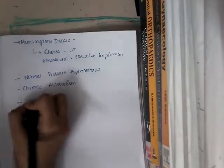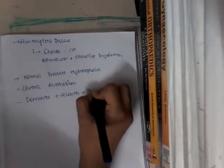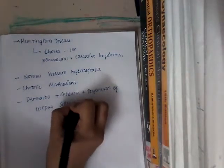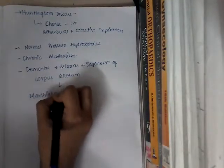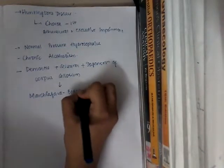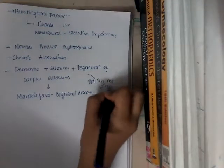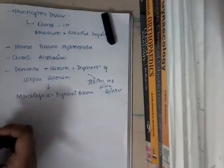There is one more disease where dementia occurs with seizures and degeneration of the corpus callosum. This is called Marchiafava-Bignami disease. It is mainly reported in Italian red wine drinkers, and the features are dementia with seizures and degeneration of the corpus callosum.